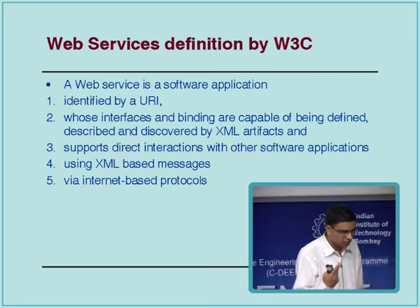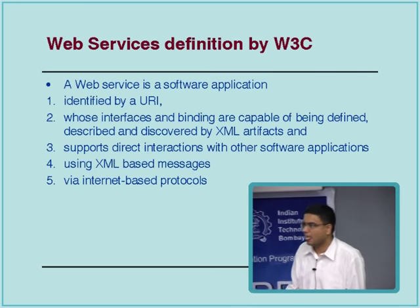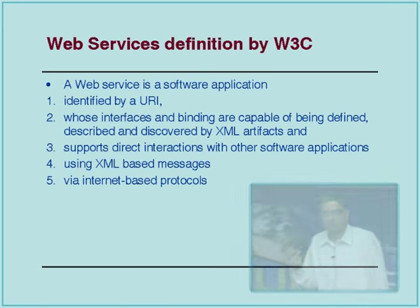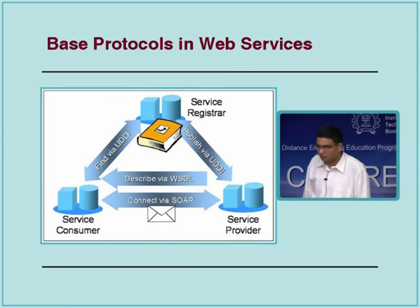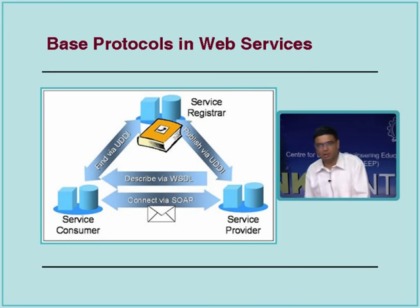SOAP sits above the actual protocol on which SOAP messages travel, and that protocol can be either SMTP or HTTP. This is a graphical view of the three core components — that's why we call them base protocols. These are the core components that every service-oriented architecture would have to have: a provider of a service, a registry, and a consumer.